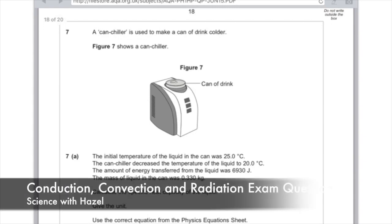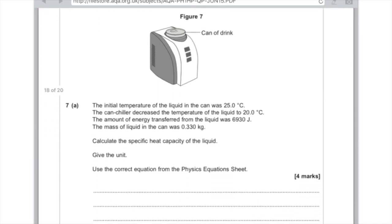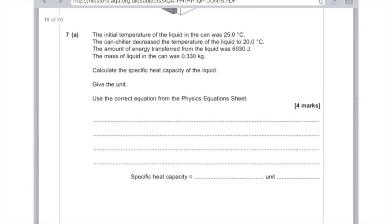I'm answering a selection of conduction, convection and radiation questions, starting with this one. A can chiller is used to make a can of drink colder. Figure 7 shows the can chiller.